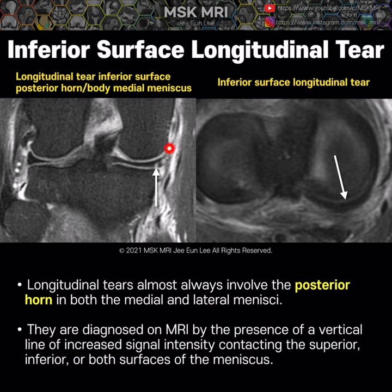In this longitudinal tear, it extends to the inferior meniscus surface and crosses parallel to the long axis of the meniscus on the corresponding axial image, consistent with an inferior surface longitudinal tear.